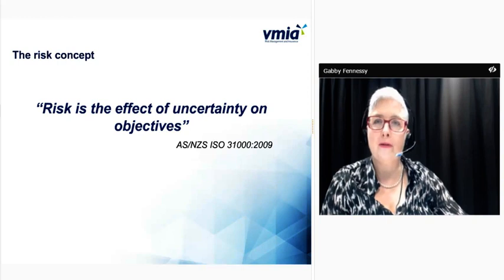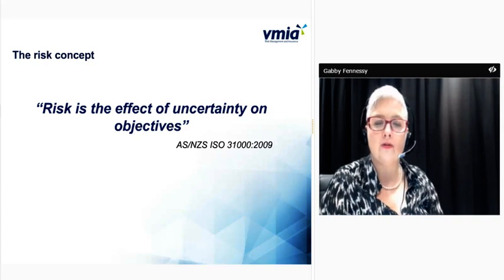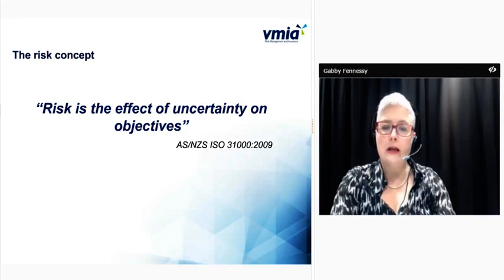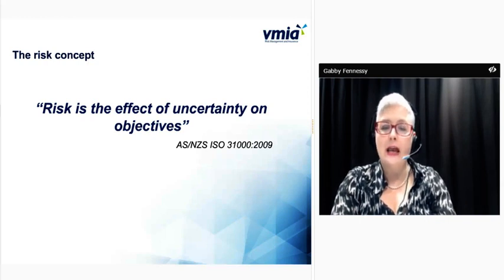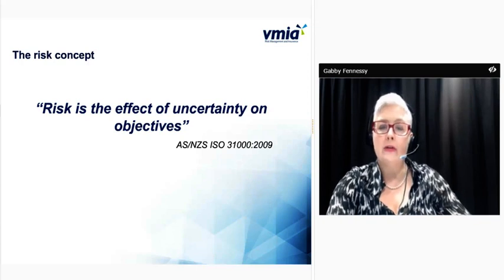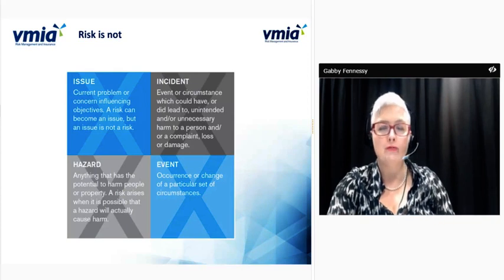Let's start with a definition. Risk management — a lot of what I talk about today is based on the ISO and Australian/New Zealand standard around risk management. Risk is the effect of uncertainty on objectives. Two really important words in this definition: uncertainty and objectives. Risk is all about trying to think about and understand uncertainty, and from a board perspective this is about what organisational strategic objectives are uncertain. It's also helpful to communicate what risk is not.